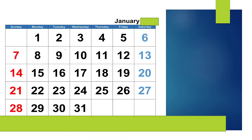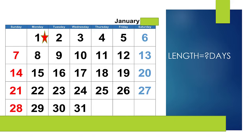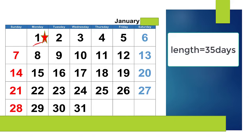If your period begins on 1st January, mark this date and count up to the 1st date of your next cycle. For example, if the next cycle begins on 21st January, the length is 21 days. If the next cycle begins on 4th February, the length is 35 days. In this way you will calculate the length of your cycle.